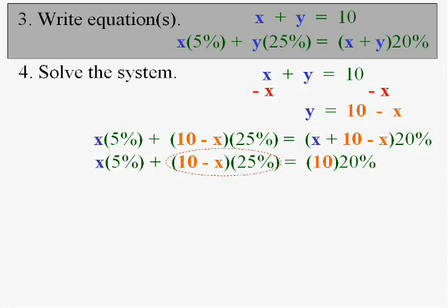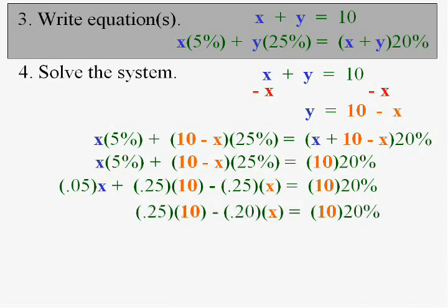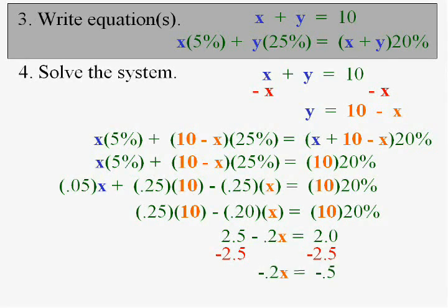This part of the equation, I'll distribute the 25%. I'll do .25 times 10 and .25 times X. A little bit at a time now. Let's put these two together, which is a .05X and a negative .25X. They're like terms and they become a negative .20X. Now, I'll multiply this, get 2.5 and let's solve for X. Subtracting 2.5 from both sides, I get negative .2X equals negative .5. All I have to do now is divide by negative .2 and X is going to be 2.5.